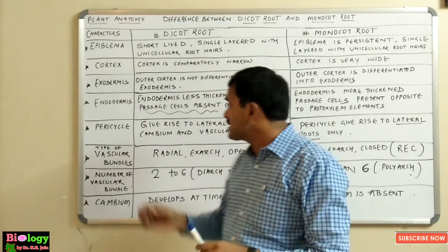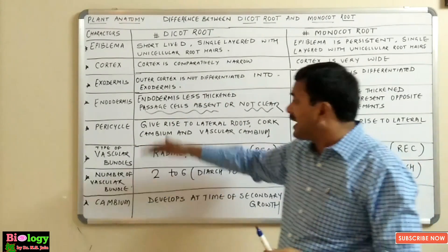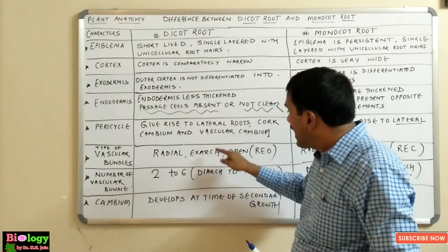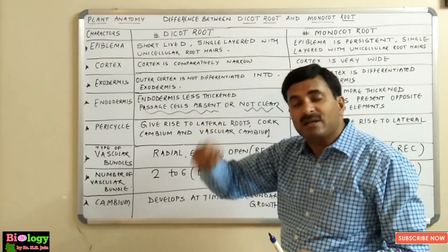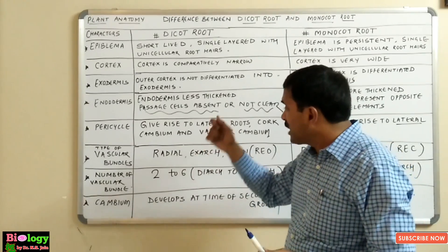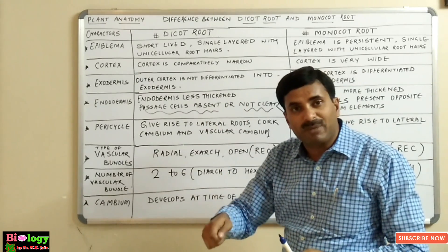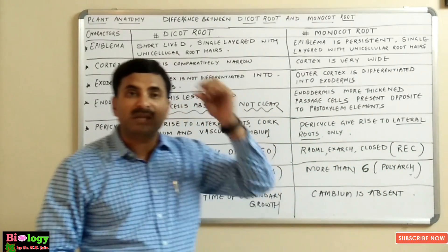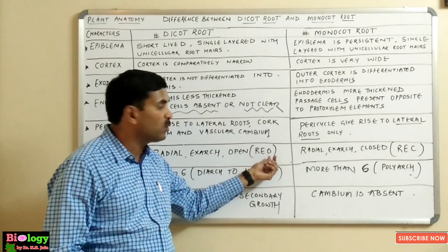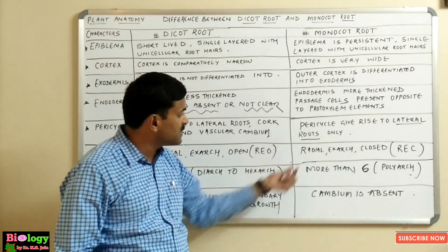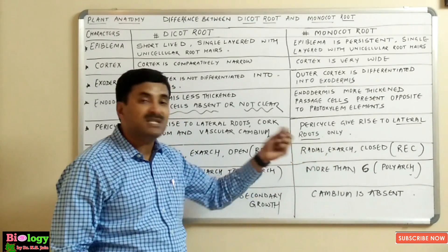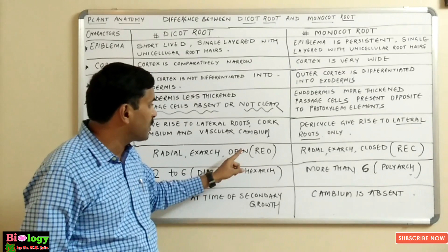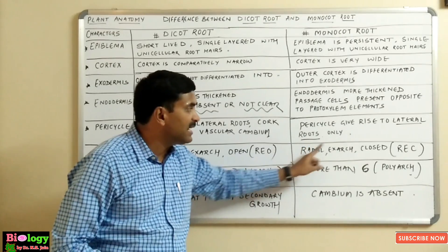The vascular bundles in dicot roots are radial, exarch, and open — abbreviated as REO. In the monocot root, the vascular bundles are radial, exarch, and closed — abbreviated as REC. Closed means cambium is absent, while open means cambium is present.